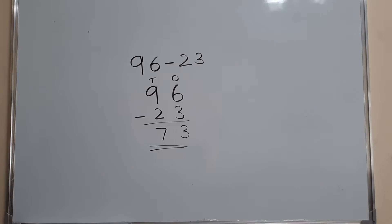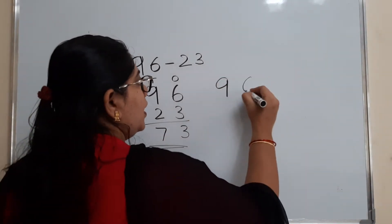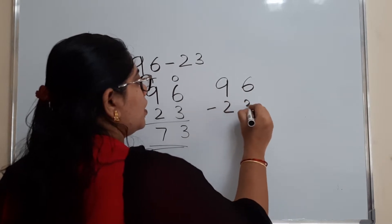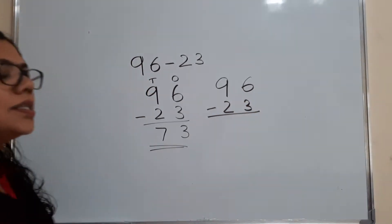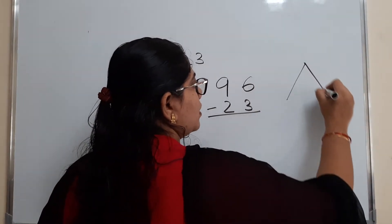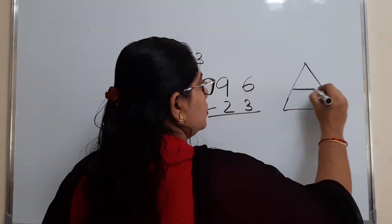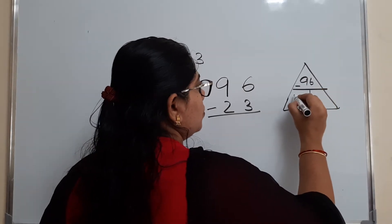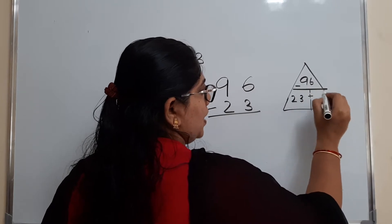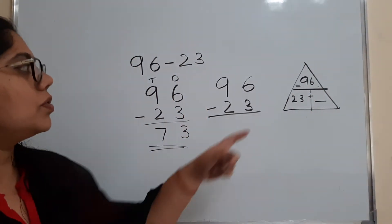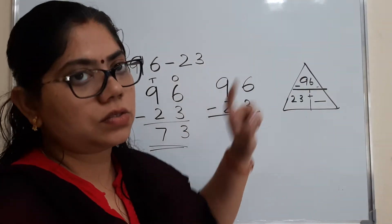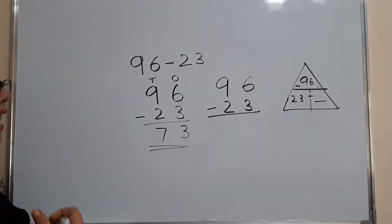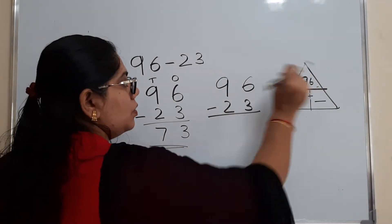But here now I am going to do it in a different way. 96 minus 23. Already in a magic triangle section, I have explained how it will come, right? If you subtract, this is 96 according to the magic triangle, and here plus.